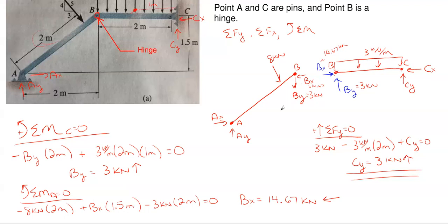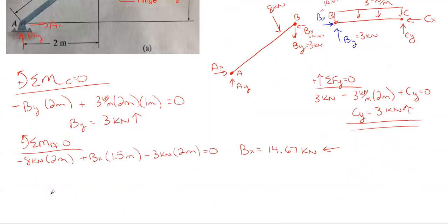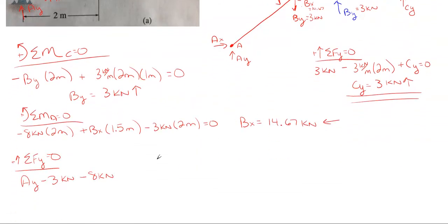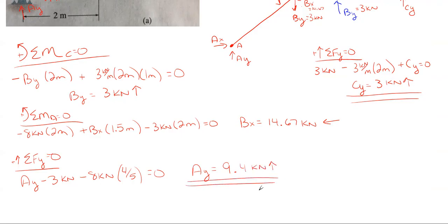Summing forces in the Y direction on the left segment to get A sub Y: A sub Y assumed upward, minus the three kilonewtons from B sub Y, minus eight kilonewtons times four-fifths (the vertical component using the 3-4-5 triangle ratio) equals zero. A sub Y pops out to be 9.4 kilonewtons upward.